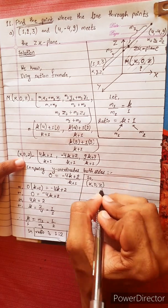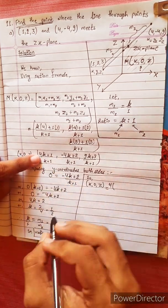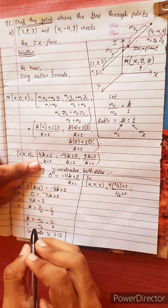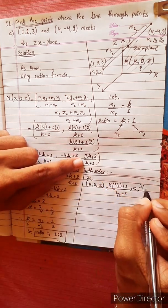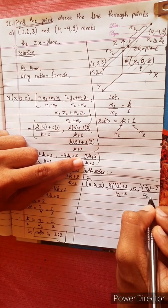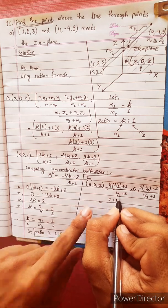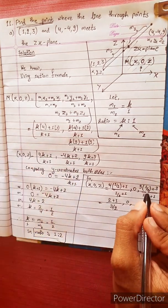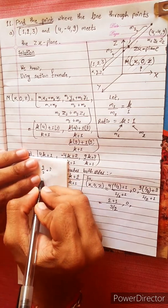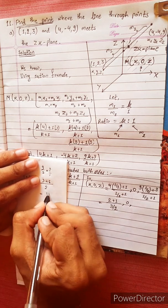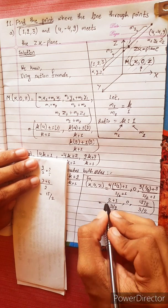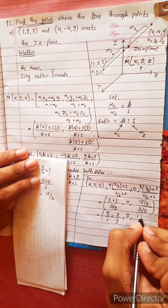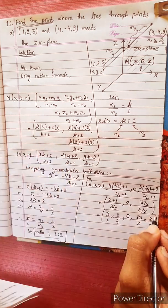So (x, 0, z) — substituting k equals 1 by 2: x equals (4 times 1/2 plus 1) divided by (k plus 1). For z: (9 by 2 plus 3) divided by (3 by 2) equals (9 plus 6) by 2 = 15 by 2, divided by 3 by 2, which gives 15 by 2 times 2 by 3, cancelling gives 5.